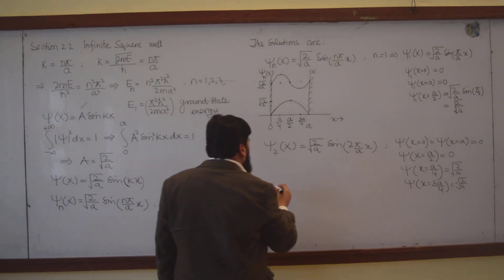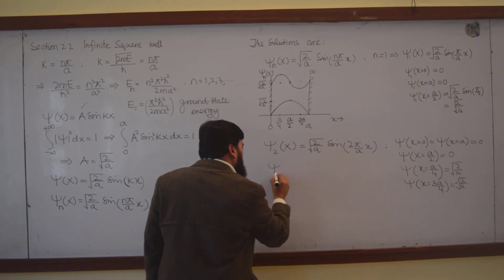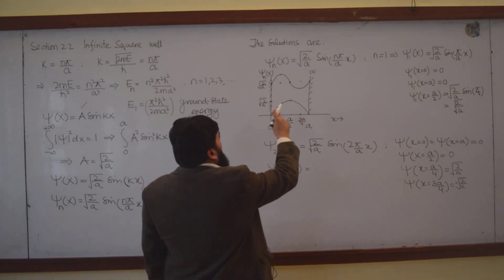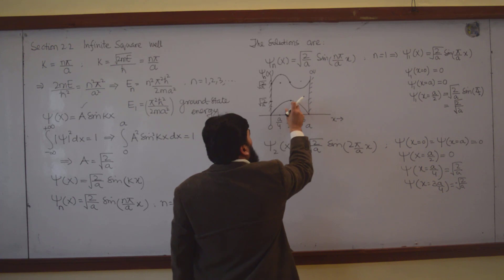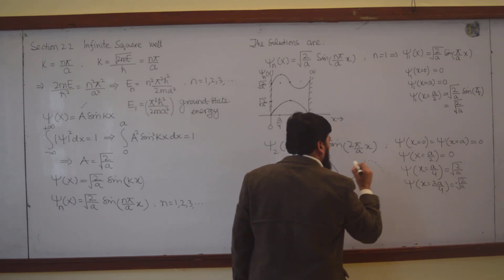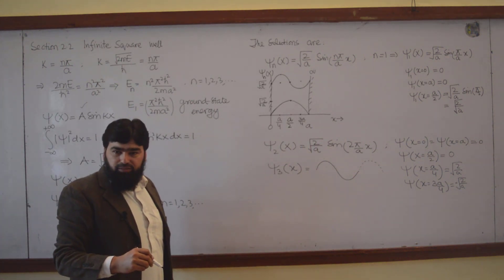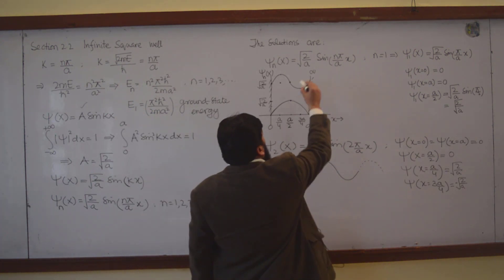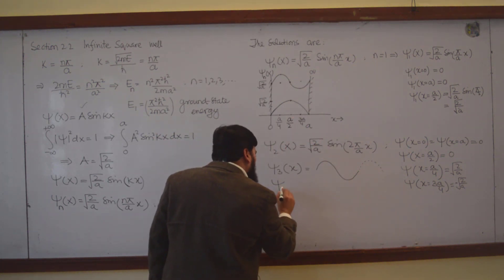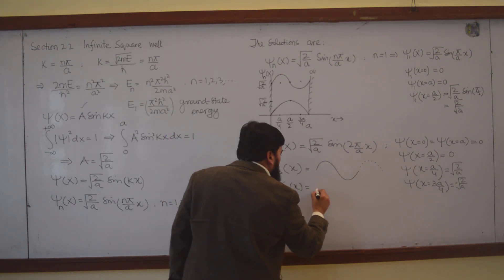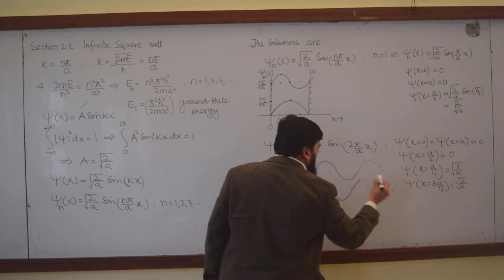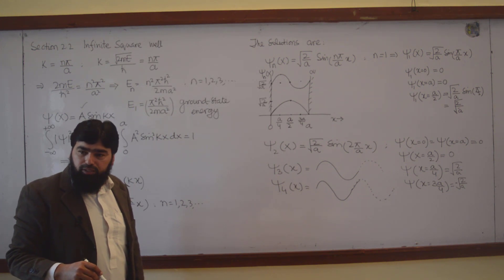If I go on to ψ₃(x), then one half cycle will be added. So it will be ψ₂ with one more cycle added. Similarly, ψ₄ will be equal to two complete cycles.